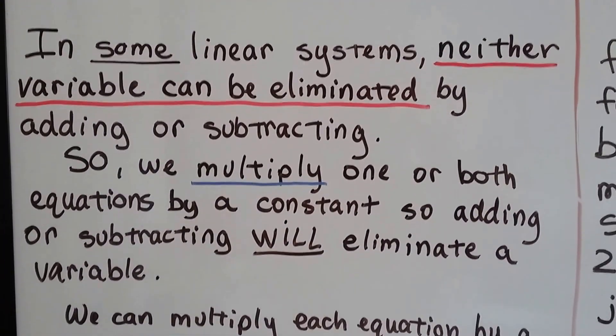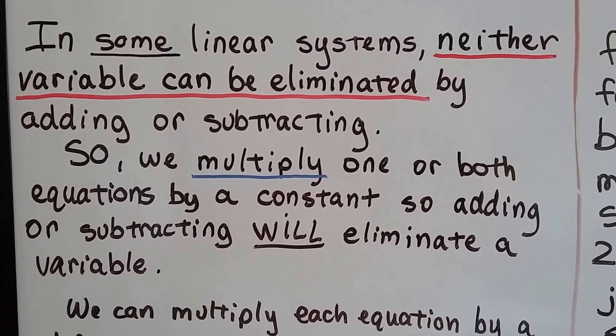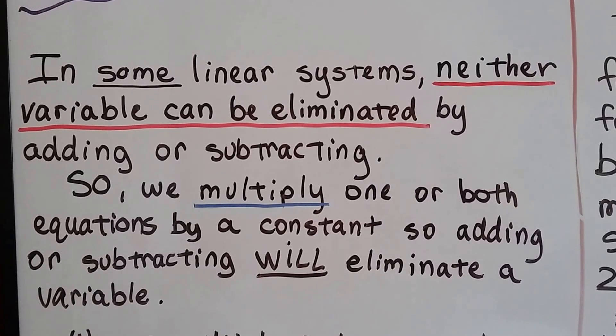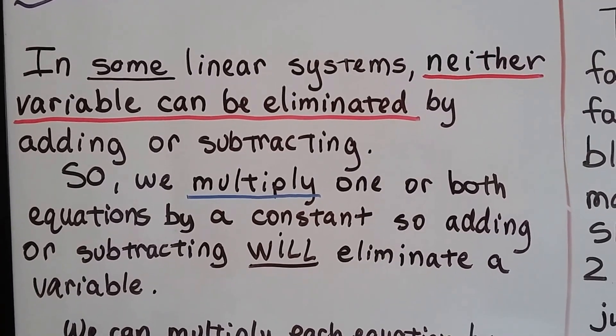In some linear systems, neither variable can be eliminated by adding or subtracting, so we multiply one or both equations by a constant. So adding or subtracting will eliminate a variable.